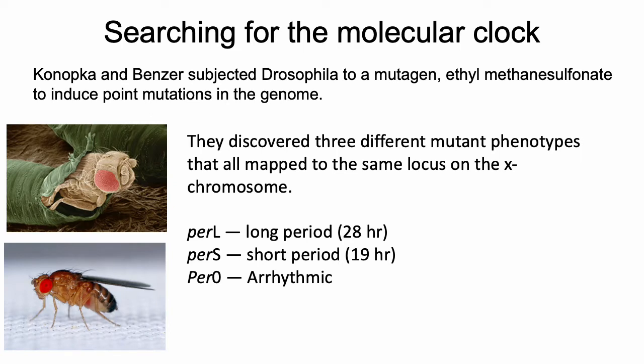What they did was they exposed Drosophila individuals to the mutagen ethylmethanesulfonate. This is a chemical that induces point mutations in the genome at random. They exposed hundreds of individuals to this, creating flies with all kinds of different mutations, and simply recorded and looked for disruptions of the circadian rhythm. Once they found them, they would figure out where the mutations were to identify which gene disruption corresponded with the disruption in their circadian output.